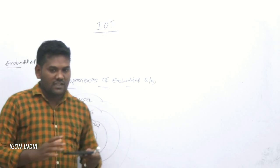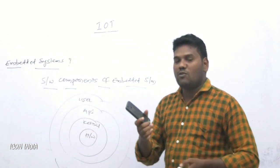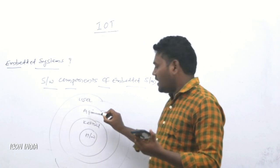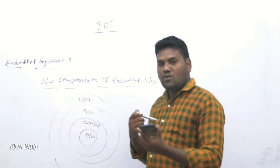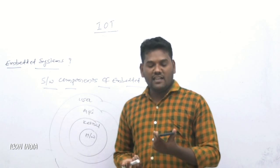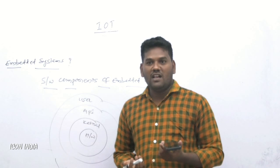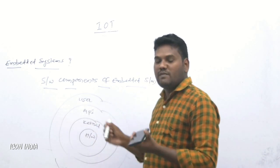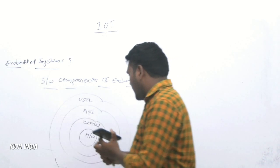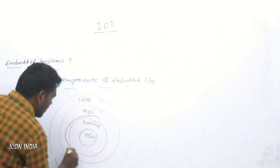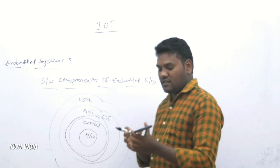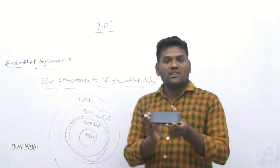Let us take the best example: a mobile phone. I am the user communicating with the mobile. API is nothing but Application Programming Interface — how to interact with the operating system, how to interact with the gallery, how to interact with the camera. All the inbuilt API programs and build files will be in your mobile phone. The API communicates with the next block, which is the OS.